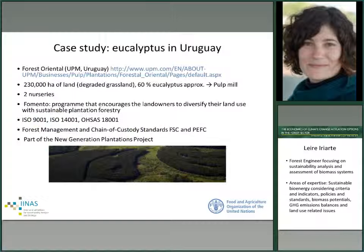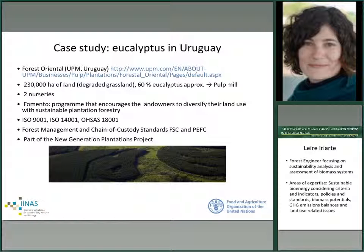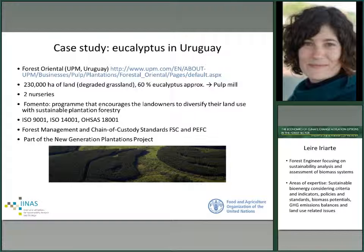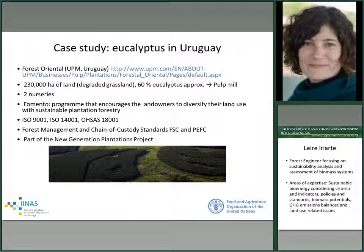To reap the opportunities that bioenergy can bring, we could learn from experiences already in place. For example, Forestal Oriental in Uruguay has set up a socially inclusive project, planting degraded grassland with eucalyptus. This experience includes a program that encourages landowners to diversify their land use with sustainable plantation forestry. They have certified forest management and chain of custody with FSC and PEFC standards. Also, this program is part of the Next Generation Plantations project.